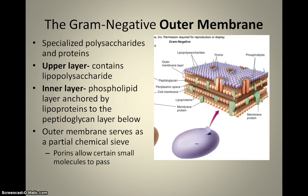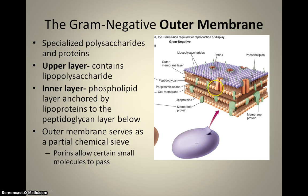The third layer of the gram-negative is the outer membrane, made up of polysaccharides and proteins. It's essentially like a phospholipid bilayer with markers that help it communicate, and it has pores that allow things to go freely into and out of the cell. However, the peptidoglycan layer still protects it from everything just flowing in and out.